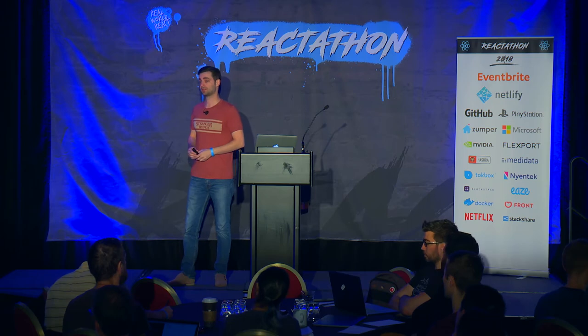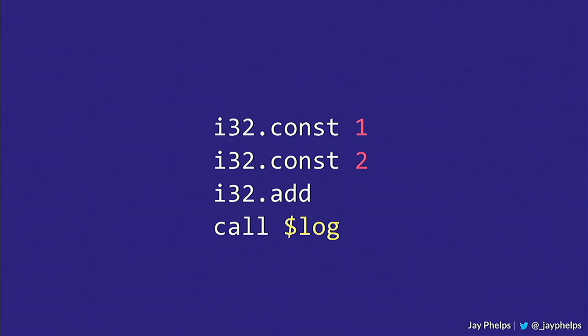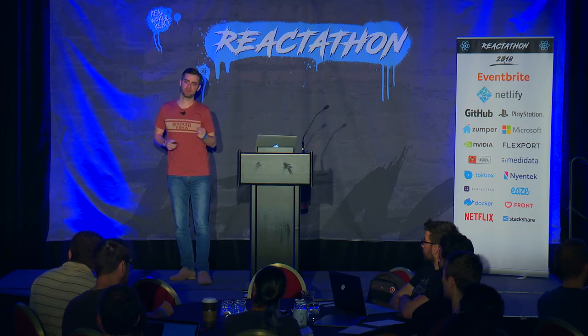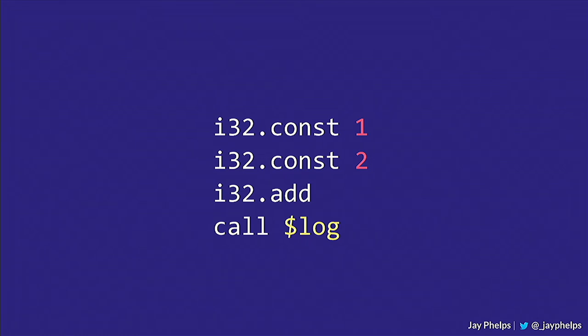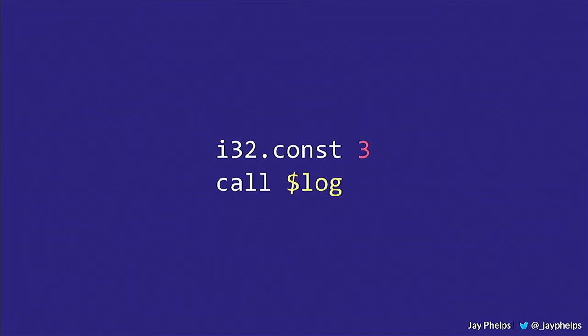If we want to do something with that resulting value — that number three — we could call the log function, which gets called with the result of the previous instructions. When debugging actual compiled WebAssembly, you'll notice compilers apply optimizations. For example, a simple 1+2 — every compiler will just turn that to 3 at compile time, which can make it a little harder to understand what's going on.